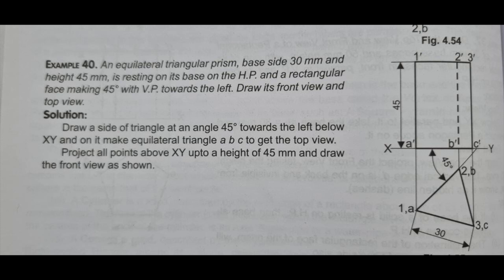Sixth sum: an equilateral triangular prism of base side 30mm and height 45mm is resting on its base on the horizontal plane, and the rectangular face makes 45 degrees with VP towards the left. Draw its front view and top view. Earlier one side was parallel to VP, then one side was perpendicular to VP, and now one side is inclined at 45 degrees to VP — so the triangular prism will have some inclination with the vertical plane.